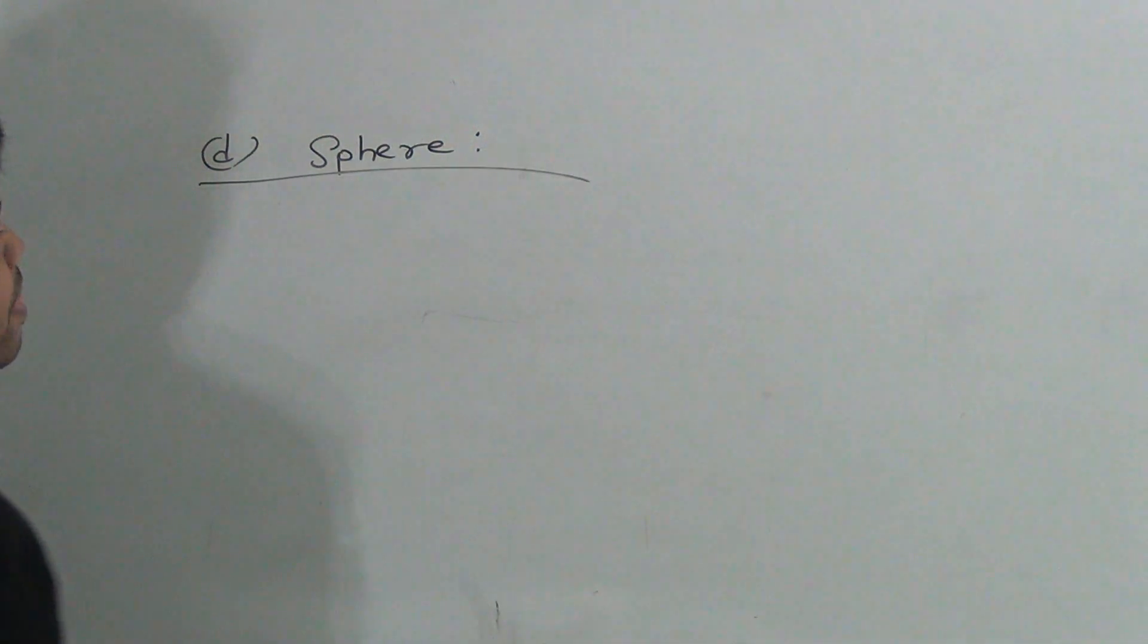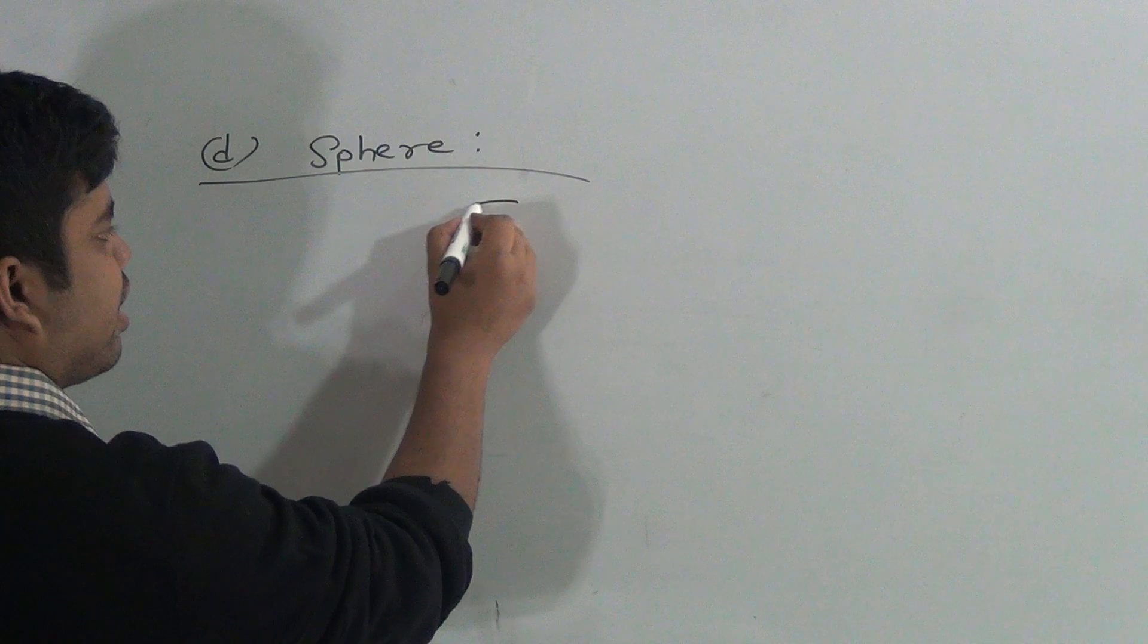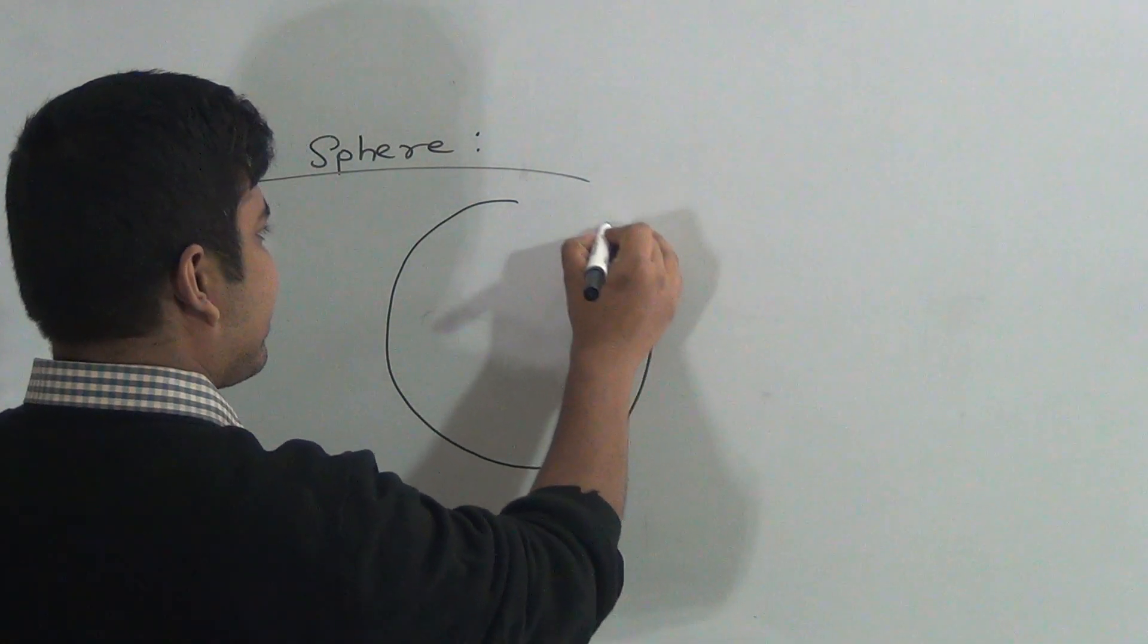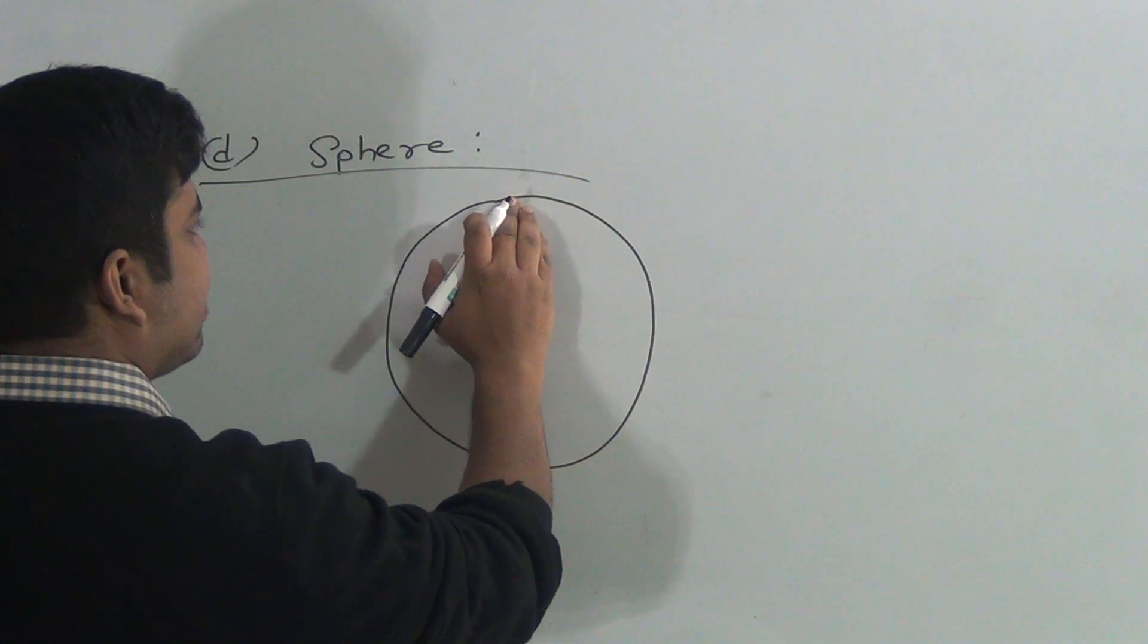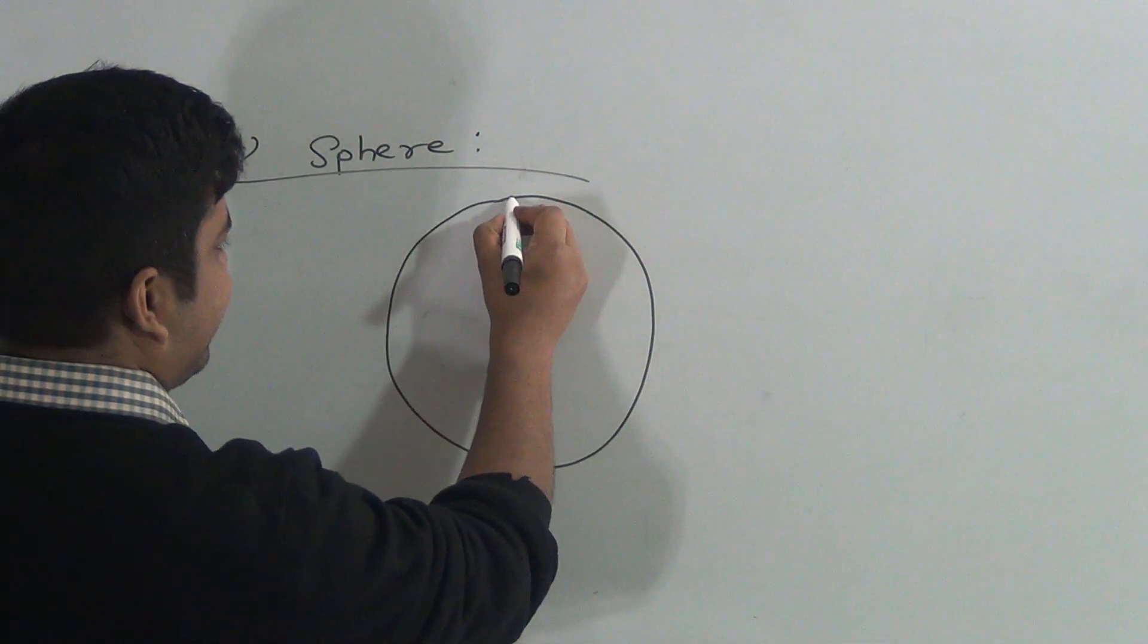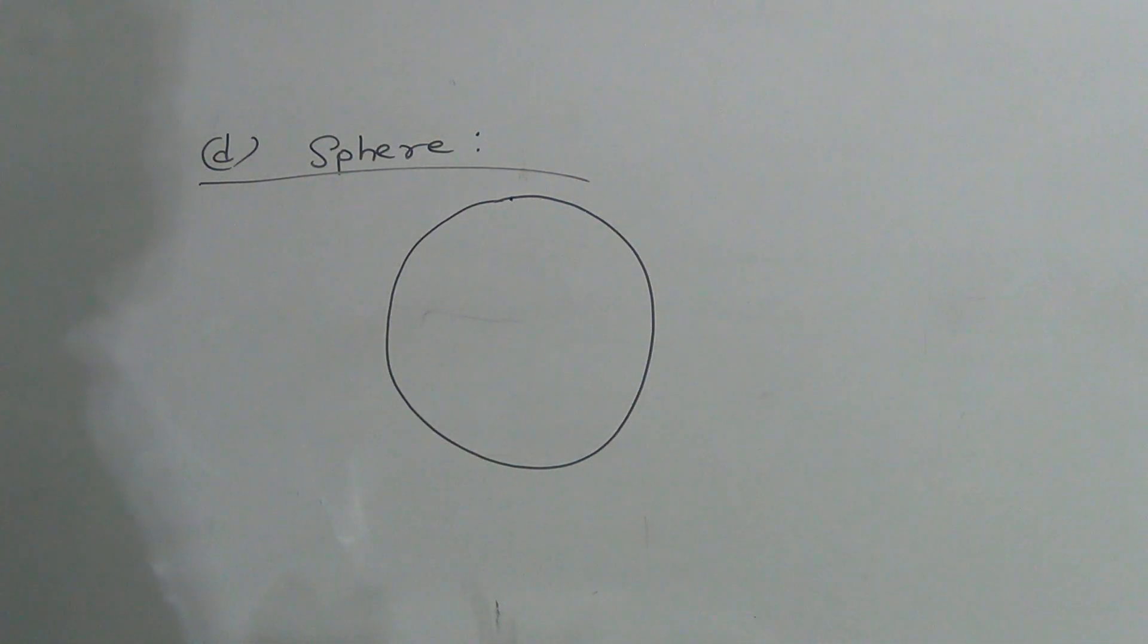It's so easy. Sphere. Sphere means a circle. I draw it freehand. But you use here bangles or any other round shape things.